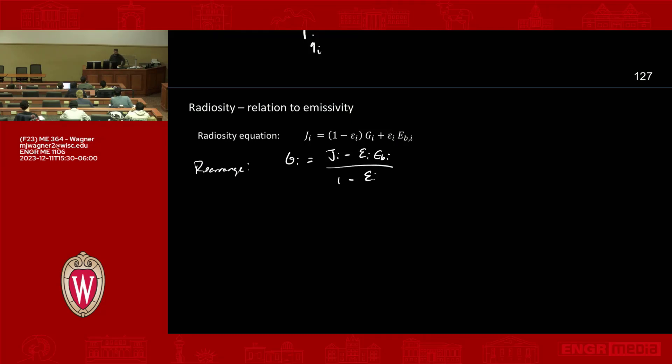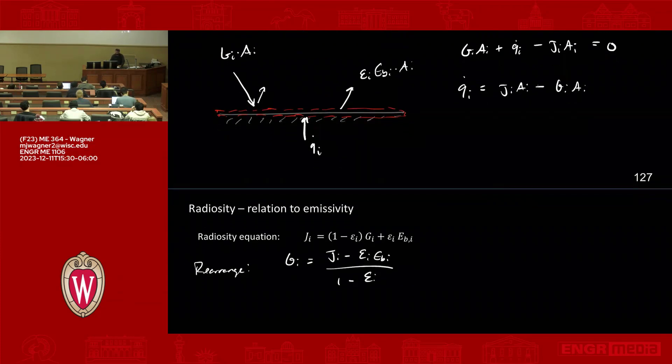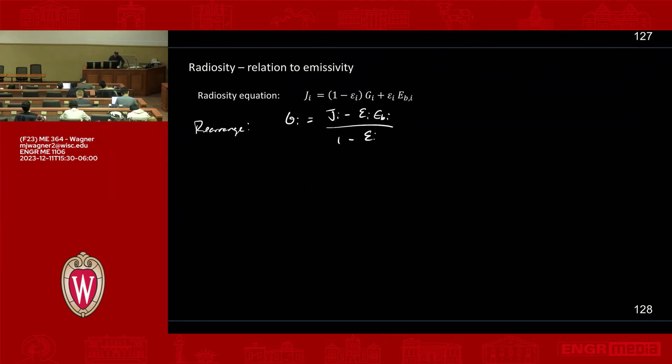So now what we can do is take this g equation and let's sub that into this energy balance up here. So that g i up there, let's just sub it in. So that just looks like this. Q dot i equals j i a i minus subbing this in, we get j i minus epsilon i ebi over one minus epsilon i times a i.